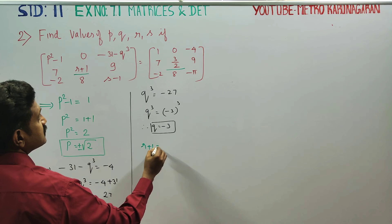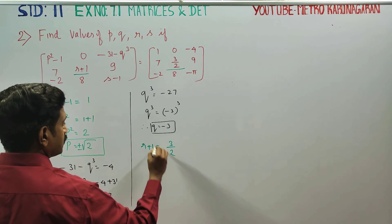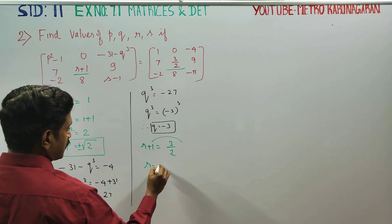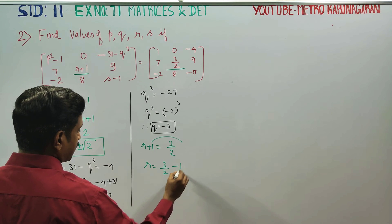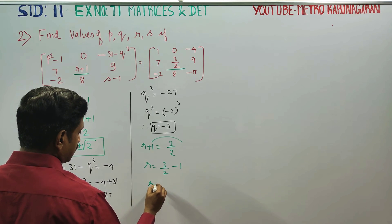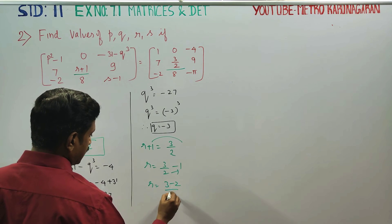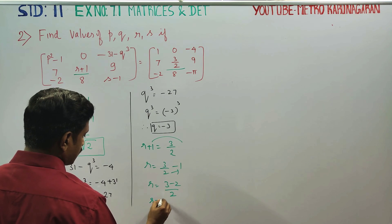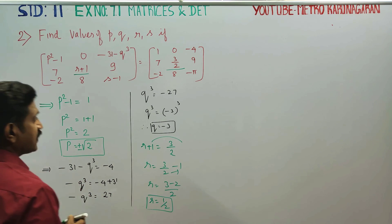R is equal to 3 by 2 plus 1. R is equal to 3 by 2 minus 1. R is equal to 3 minus 2 by 2. R is equal to 1 by 2. That is your answer for R.